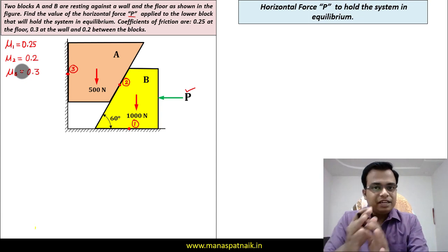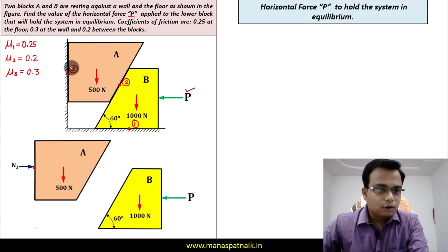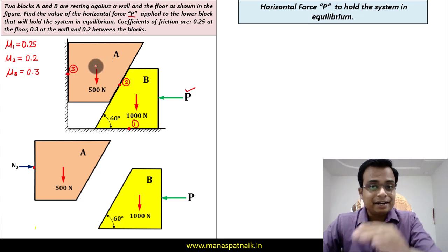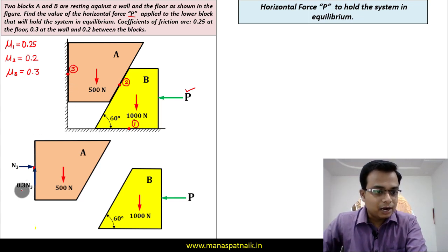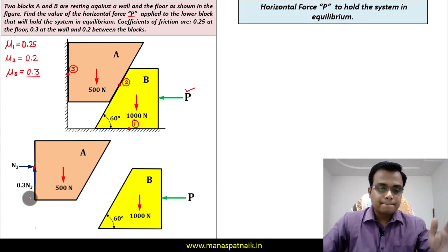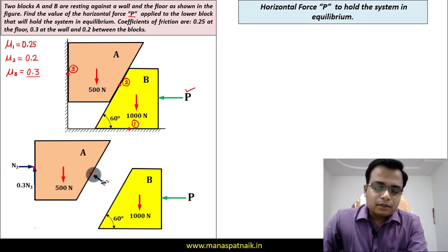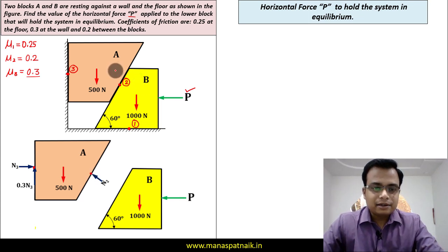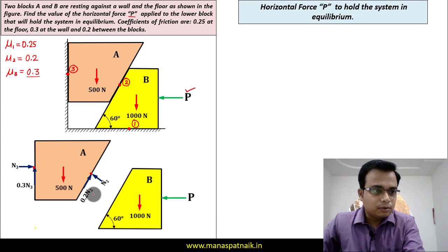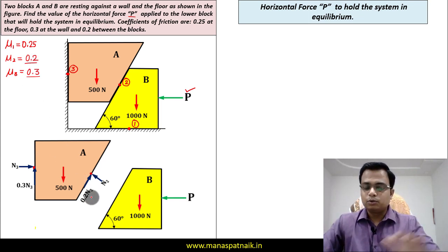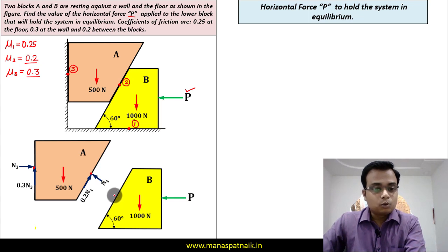Let's free these two bodies and analyze all the forces at the three points of contact. From the wall we have normal N3, and since block A has a tendency to move downwards, friction from the wall is upward: μ3·N3 = 0.3·N3. From block B onto block A, the normal is N2, and since A tends to move downwards, friction is upward: μ2·N2 = 0.2·N2. By Newton's third law, these forces reverse direction on block B.